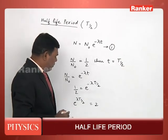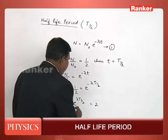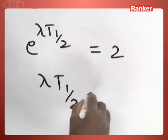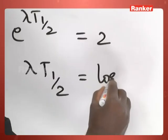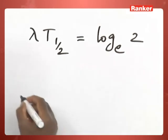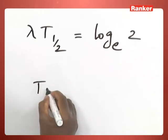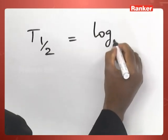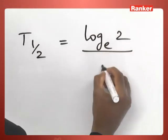Now, proceeding further, we can write this expression as lambda t by 2 equal to logarithm base e of 2. From that, we can write equation for t half, that is half life period, as log base e 2 divided by lambda.